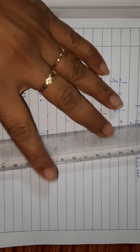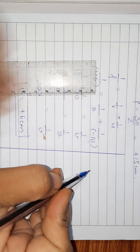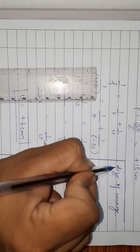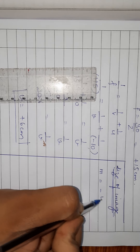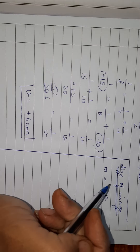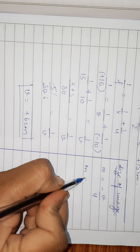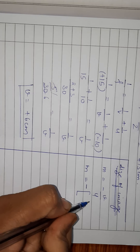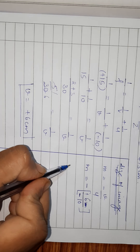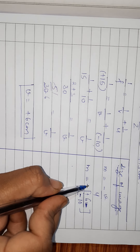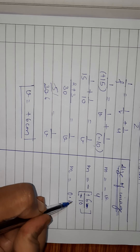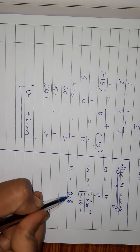Now to find the size of the image we use the magnification formula. Magnification equals minus V upon U. Putting values: minus of (plus 6) upon (minus 10). The two minus signs cancel, giving magnification equals 0.6. So the image formed is 0.6 times the original object.